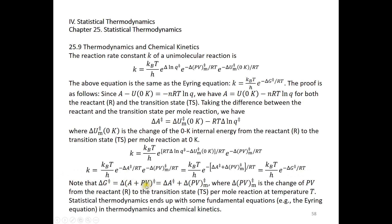Because G = A + PV, ΔG‡ = ΔA‡ + ΔPV‡. Delta PV sub M is the change of PV from the reactant to the transition state per mole reaction at temperature T. We have proved the Eyring equation: the rate constant k = (k_B T / h) × e^(−ΔG‡/RT). Statistical thermodynamics thus yields fundamental equations such as the Eyring equation, connecting thermodynamics and chemical kinetics.